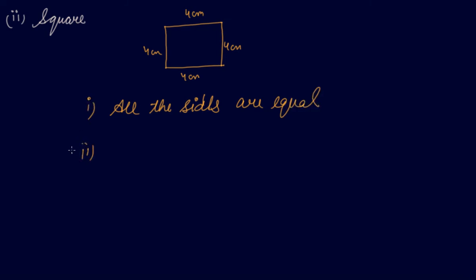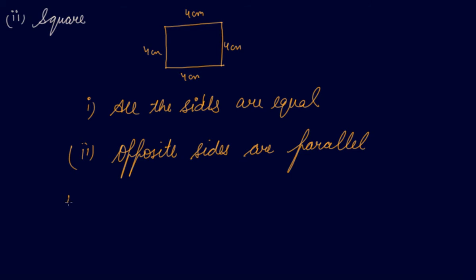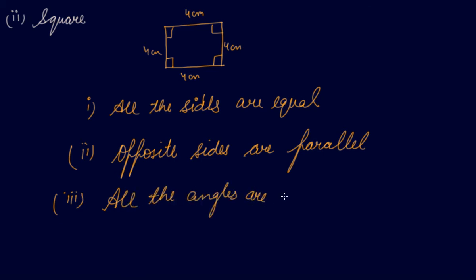The opposite sides of a square are parallel. And all the angles are 90 degrees. So this is a square where all four sides are equal.